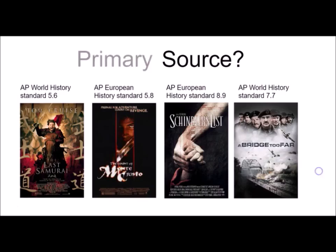But I continue this questioning with students: how do we turn them into primary sources? You cannot make The Last Samurai a primary source about the Meiji Restoration, and Schindler's List is not a primary source about the Holocaust. In order to make them into primary sources, we have to engage instead with the films themselves and the times in which they were created. The Last Samurai is a primary source about Tom Cruise's film career, or The Count of Monte Cristo as a primary source about the engagement with classical literature as a feature film in 2002.